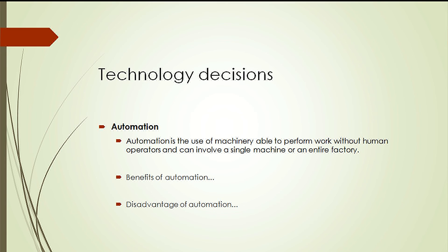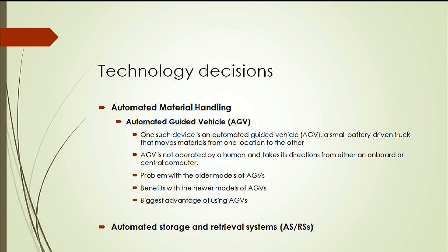However, automation does have its disadvantages. First, automation is typically very costly, and these costs can be justified only with a high volume of production. Second, automation is typically not flexible in accommodating product and process changes. One type of automated material handling device is the automated guided vehicle (AGV) — a small battery-driven truck that moves materials from one location to another. The AGV is not operated by a human and takes its directions from either an on-board or central computer.